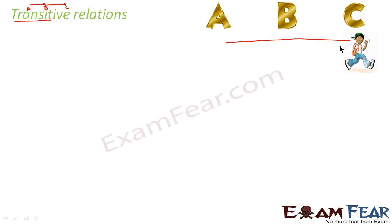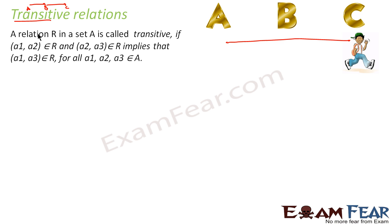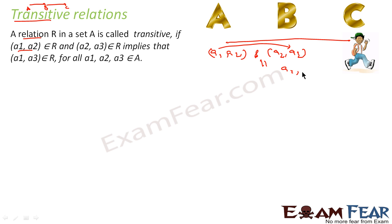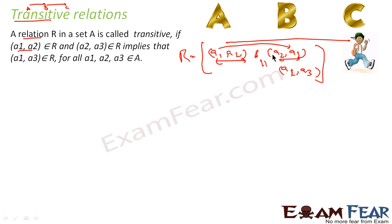In the mathematical world, a relation is called transitive if — suppose A1 comma A2 is part of the set, and A2 comma A3 is also part of the set — that should imply that A1 comma A3 is also part of the set. A relation is said to be transitive if and only if whenever A1 A2 and A2 A3 are in the relation R, then A1 A3 must also be in R.